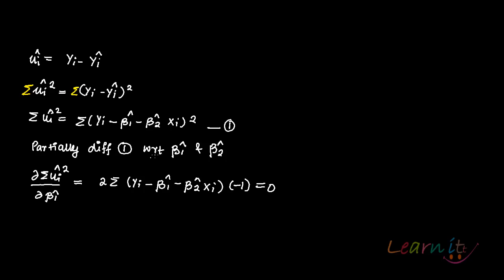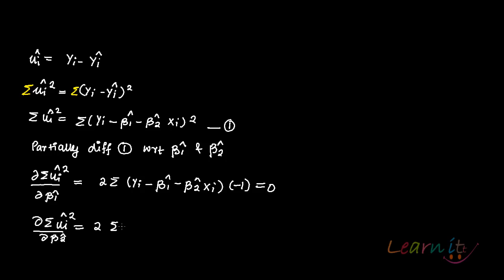Why 2? Because the 2 comes from differentiating the square. And why minus 1? Because of the minus sign with beta1-hat. You also differentiate with respect to beta2-hat: del of summation ui-hat squared upon del beta2-hat equals 2 summation (yi minus beta1-hat minus beta2-hat·xi) times (minus xi), equal to 0.